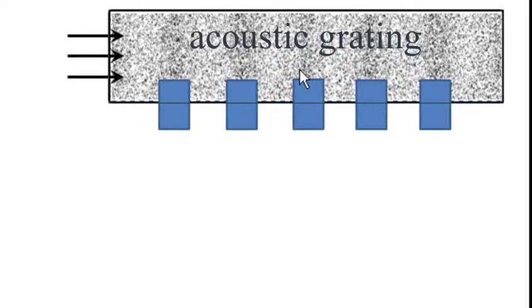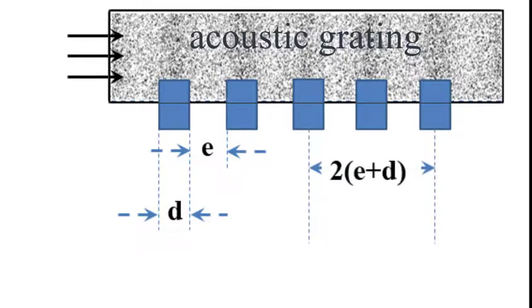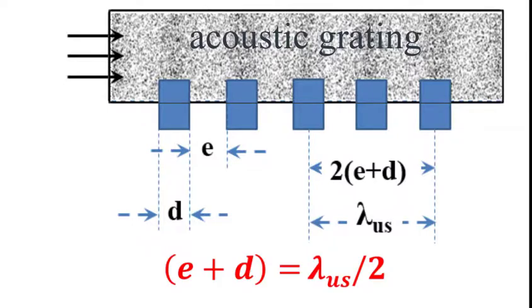Let width of each slit is E and width of each opaque region is D. E plus D is known as grating element of the grating. So the grating element is the distance between two consecutive compressions in the standing longitudinal wave or it is equal to the half of the wavelength of ultrasonic wave. If you know grating element, you can calculate the velocity of ultrasonic wave. Let us know how do we do that.